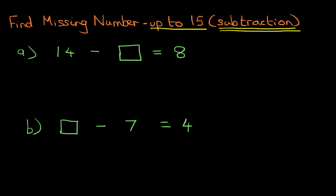Now let's have a look at the first one. We've got 14 minus something equals 8. What we can do is we can swap these two around. So if the missing box is in this position, we can swap it around. So therefore, the question would read 14 minus 8 equals the missing number. We have swapped, changed the positions of the box and the number 8.